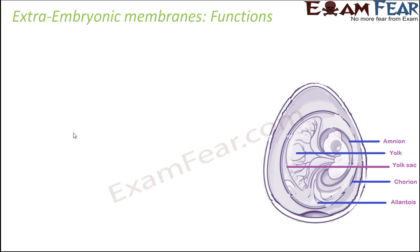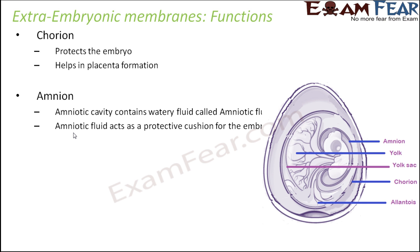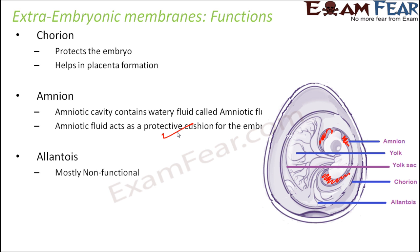Now for the functions of the extra-embryonic membranes: chorion protects the embryo and helps in placenta formation — the placenta being the connecting link between the embryo and the mother. Amnion's amniotic cavity is filled with amniotic fluid, which acts as a protective cushion for the embryo. Allantois is mostly non-functional. The yolk sac is also mostly non-functional, but it is a site of early blood cell formation.